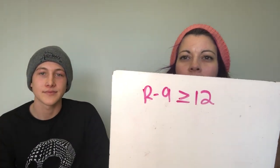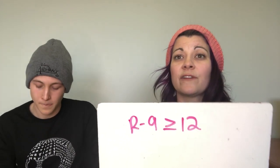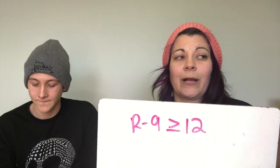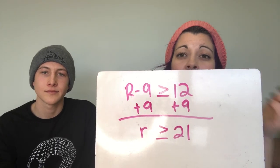Here's a problem: r minus 9 is greater than or equal to 12. We want to isolate r, so we do the inverse operation and add 9 to both sides. If you want more detail on solving equations, go watch that video — it's the same process. So r is greater than or equal to 21.